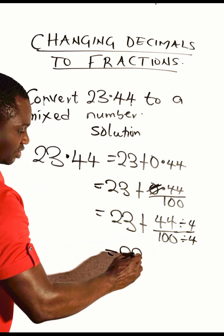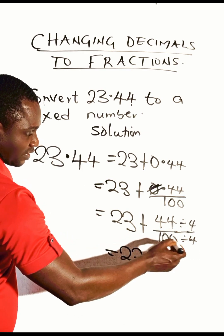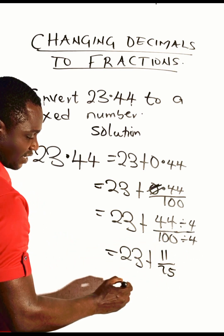Then we have 23 plus... 4 divides 44, that will be 11. 4 divides 100, that's 25. So our final...